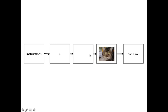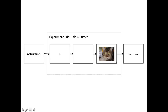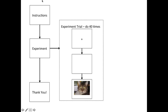We want to run through this a number of times, so we're going to run this particular section 40 times — creating a loop with 40 different cat faces, 20 male and 20 female. Another way of visualizing the experiment is in a vertical format: instructions at the top, then the loop block for the experiment itself, then the sequence of trials, finishing off with a thank you message. The experimental trials are listed vertically: fixation cross, blank screen, and cat face picture — run 40 times.